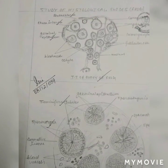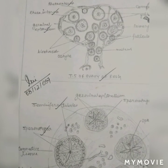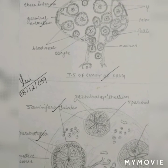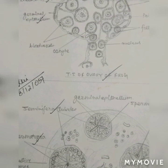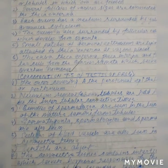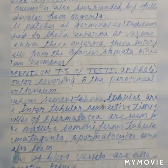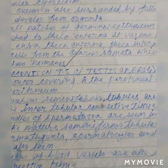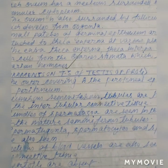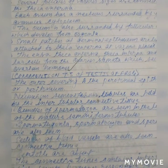Spermatogonia, spermatocytes, and spermatids are also seen. Sections of blood vessels are also seen in the connective tissue. Sertoli cells are absent. The connective tissue contains interstitial cells which secrete hormones responsible for the appearance of the secondary sexual characters.